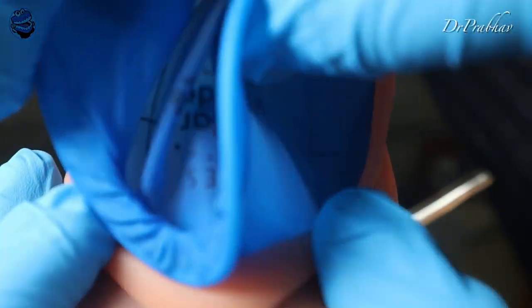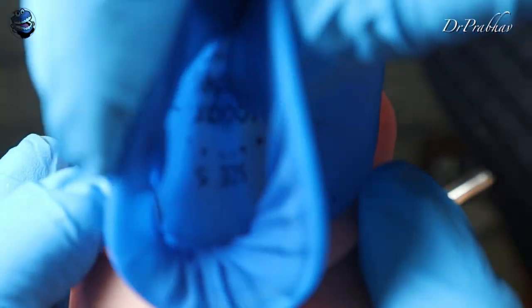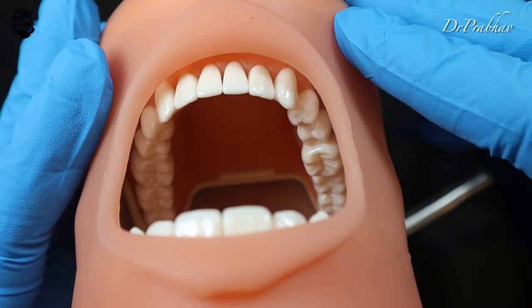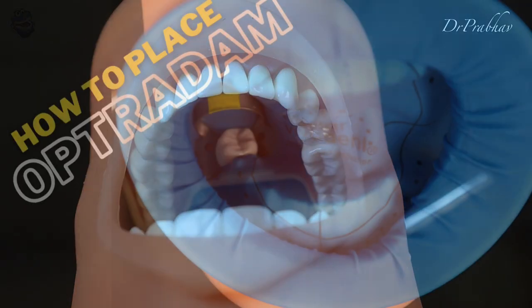Once we were able to disengage from the lower aspect easily, we could remove it from the upper lips or the upper aspect. It is easy and the dummy was very happy that his treatment was also done. Thanks for watching, bye bye.